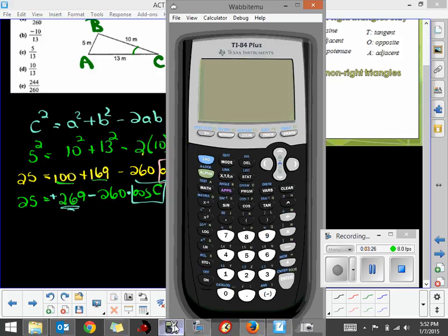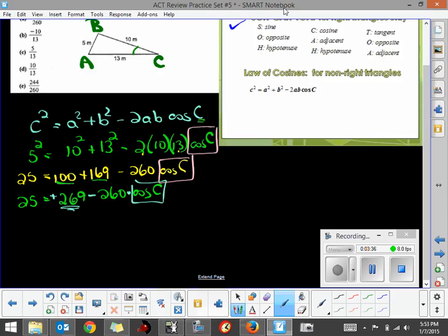I want to take 25 minus 269, and I don't want to make a mistake on that, so I'm going to elicit a little help here. I've got 25, and I want to subtract 269, which is negative 244. So I have negative 244 equals negative 260 times the cosine of C.